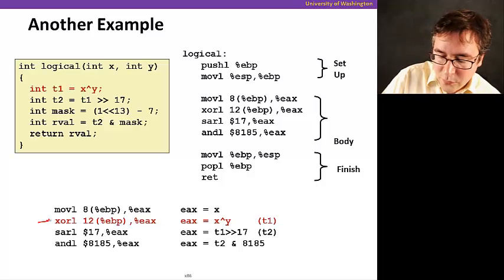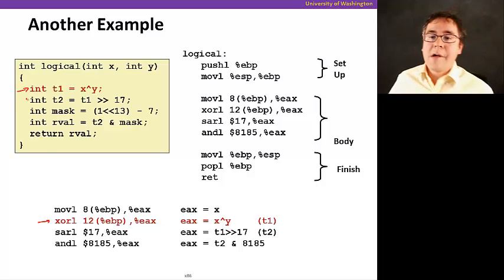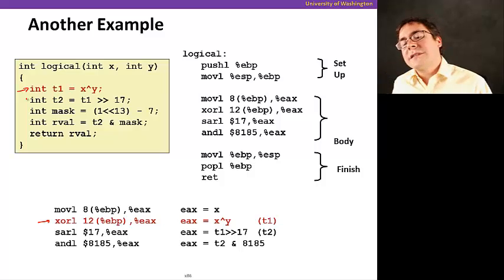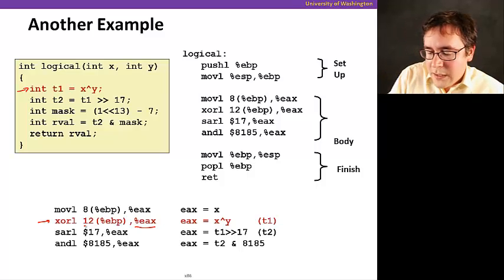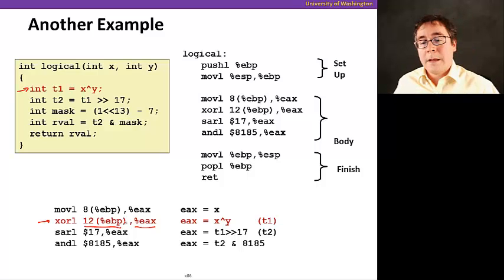And let's see what the first instruction is doing now. This first instruction here, this XOR, is implementing this statement here. And look how interesting. This instruction is an interesting example because it has a register operand, as well as a memory operand. And this memory operand happens to point to where Y was located. So that's why this instruction implements X XOR Y.